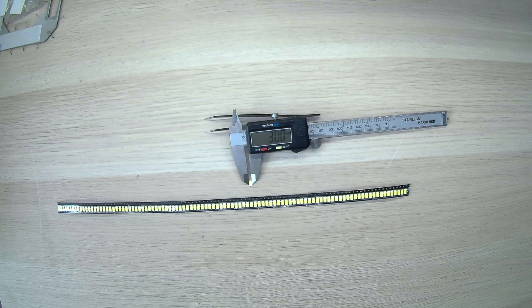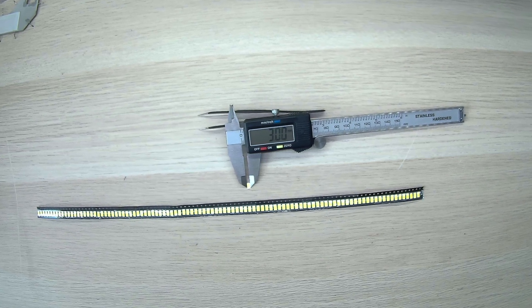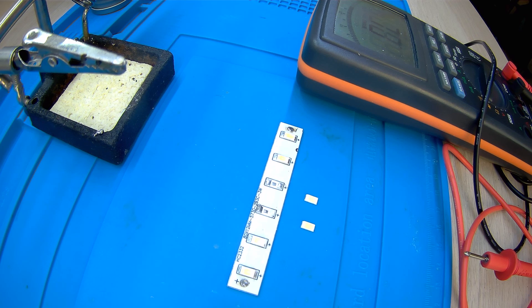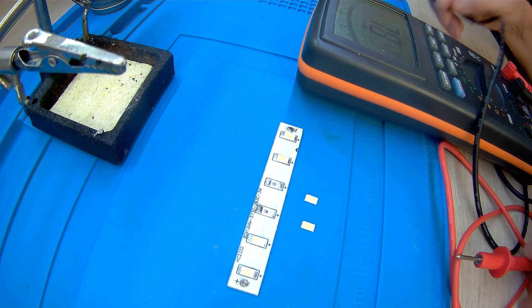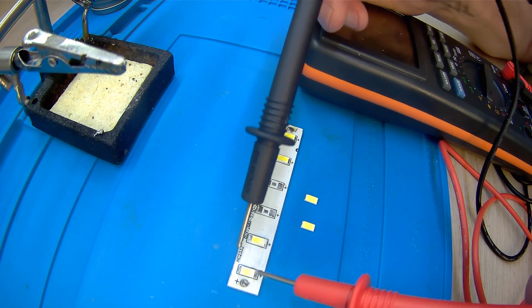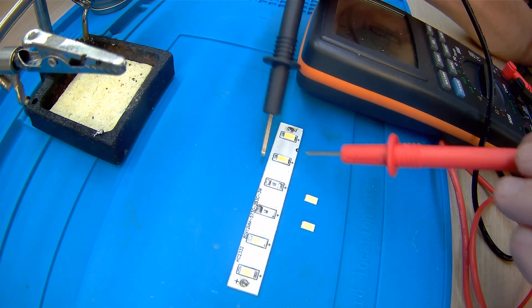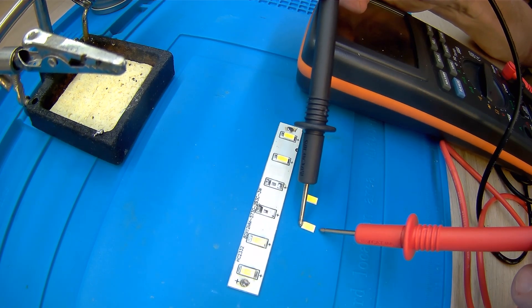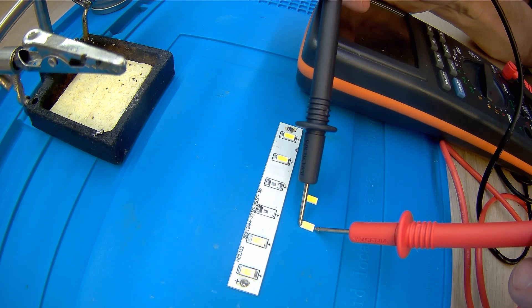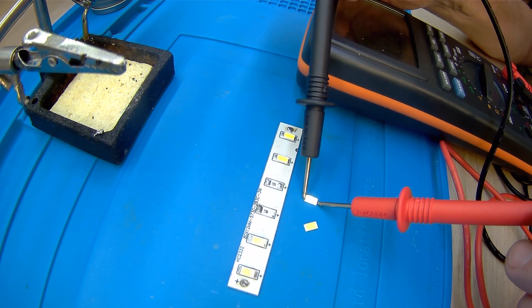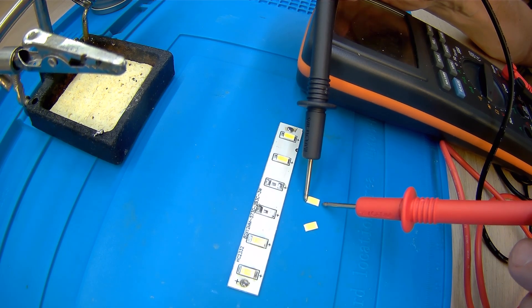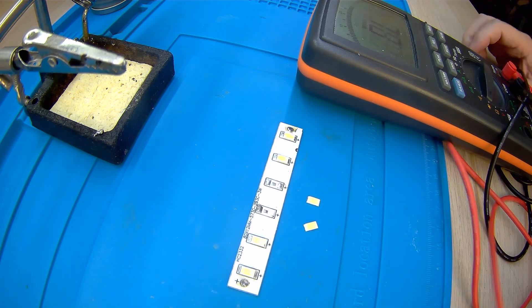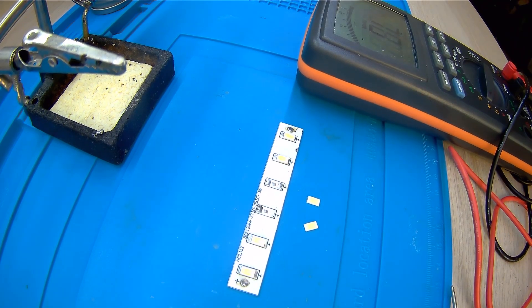LED type 5730 is supplied in a strip from which we take two pieces, and it is important to position them correctly relative to the strip on which we will mount. We check the position of the LED on the strip and at the same time the location of the new LEDs. We see that they light up at the same position of the probes of our multimeter. This way we are sure of the correct position of the LED before installation.